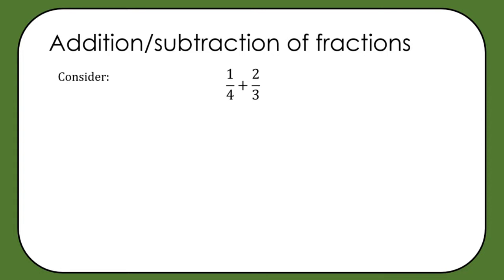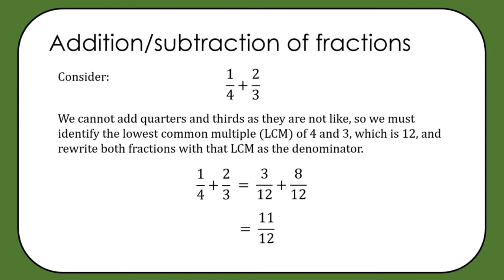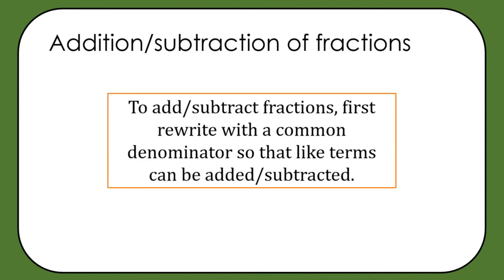For example, one quarter plus two thirds. Quarters and thirds are not like, so we identify the lowest common multiple of 4 and 3, which is 12. We rewrite both fractions with 12 as the denominator: one quarter becomes 3 twelfths (multiplying numerator by 3), and two thirds becomes 8 twelfths (multiplying numerator by 4). Now we have like terms: 3 twelfths plus 8 twelfths equals 11 twelfths.